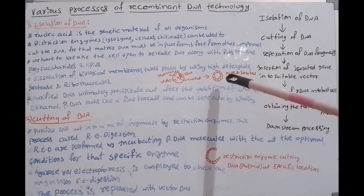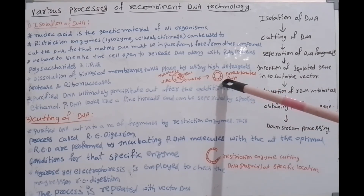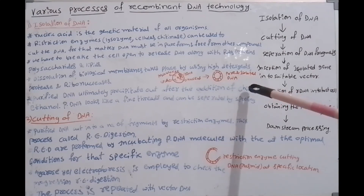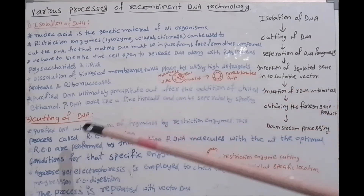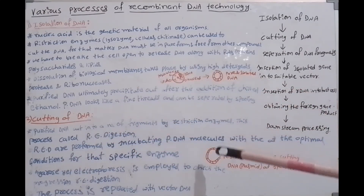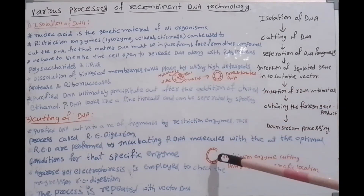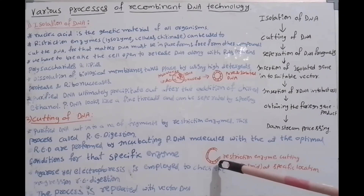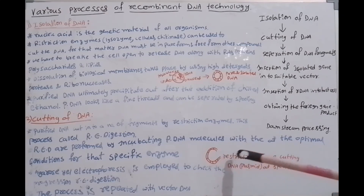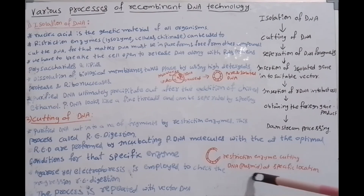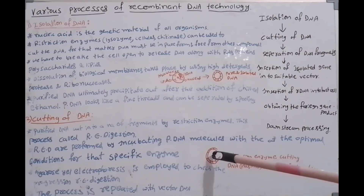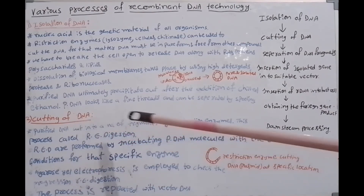The purified DNA from the first step — isolation — is now cut at specific locations using restriction enzymes. Restriction enzymes cut the DNA at specific locations, completing the second step.